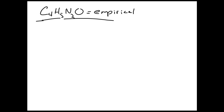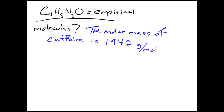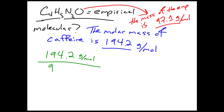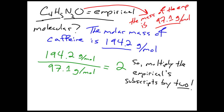Regardless, we've got our empirical formula. Now, how do we get the molecular formula? If the question wants you to calculate the molecular formula, it needs to provide a little extra information — it will give you the molar mass of the compound, which is experimentally found data. In this case, the molar mass of caffeine is 194.2 grams per mole. If you calculate the mass of our empirical formula — 12.01 times 4, plus 1.008 times 5, plus 14.01 times 2, plus 16 — you get 97.1 grams per mole. You divide the given molar mass by the empirical mass to get a whole number factor, then multiply all the empirical subscripts by that factor to get the molecular formula.